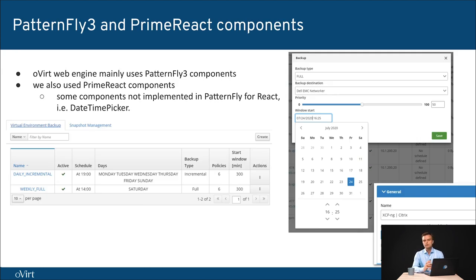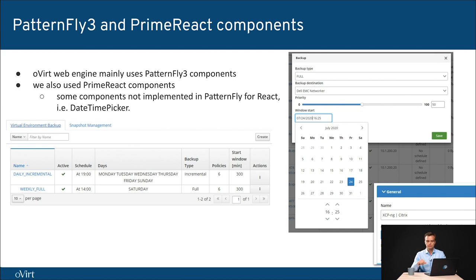There are a few differences between PatternFly 3 and PrimeReact components. We noticed we were missing a date-time picker, which was one of the reasons we investigated PrimeReact libraries. You can notice the differences in how they look and feel, but we managed to bind them together. On the left is a regular table you can see in the OVirt UI. On the right are PrimeReact components, especially the date picker. These are used in other aspects of the interface like accordions, dropdowns, etc.